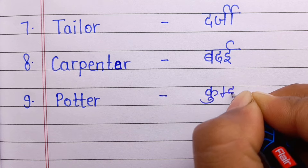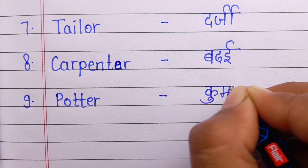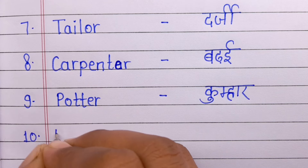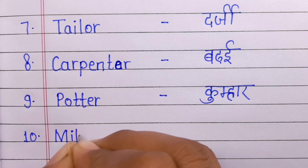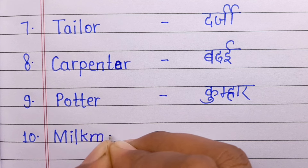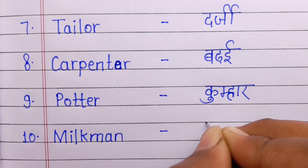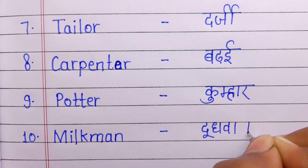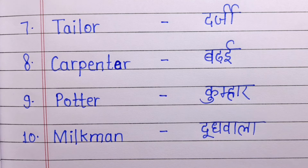Number 9: Potter. Potter means Kumar. Number 10: Milkman. Milkman means Doodhwala. If you like this video, please like this channel and subscribe to our next video.